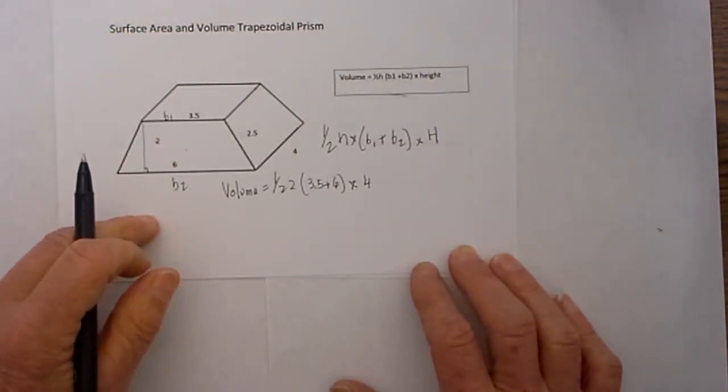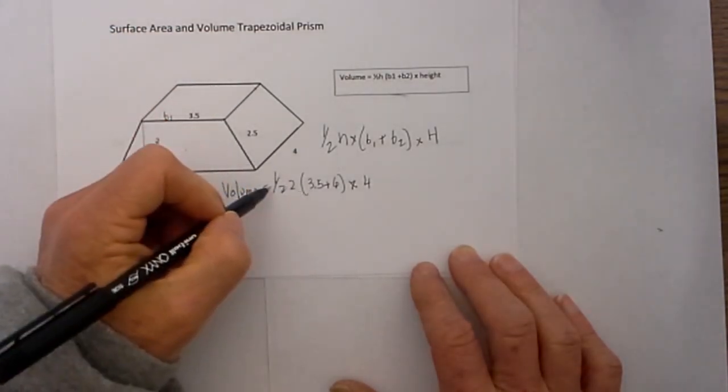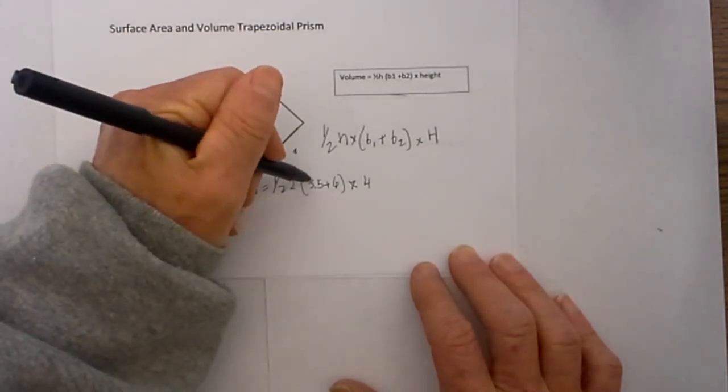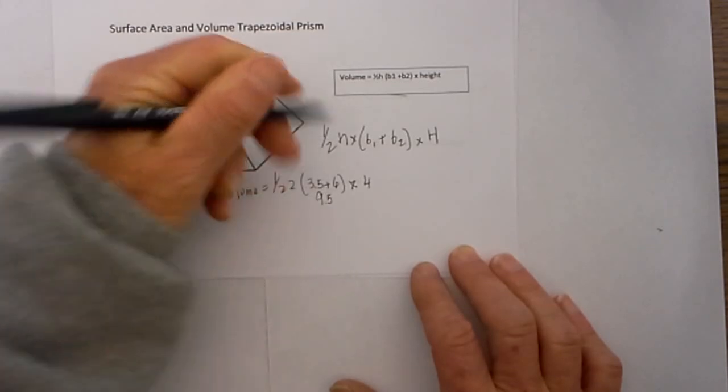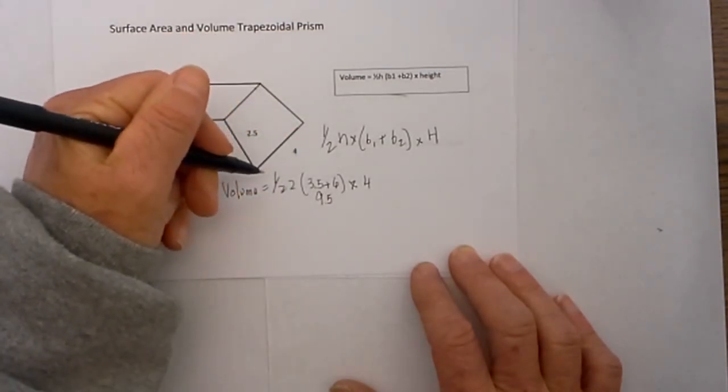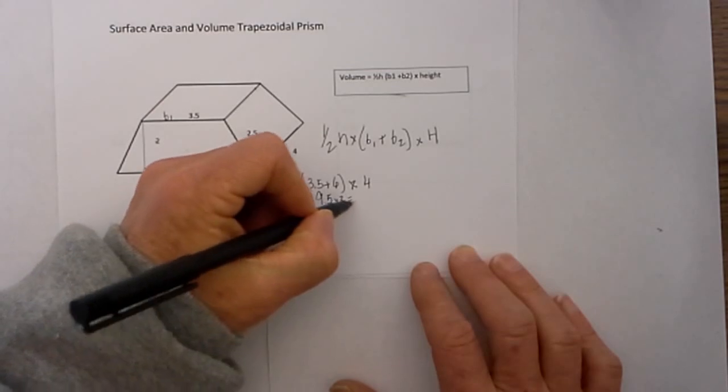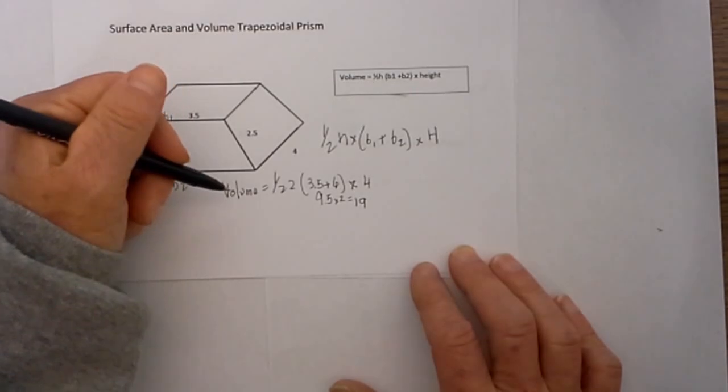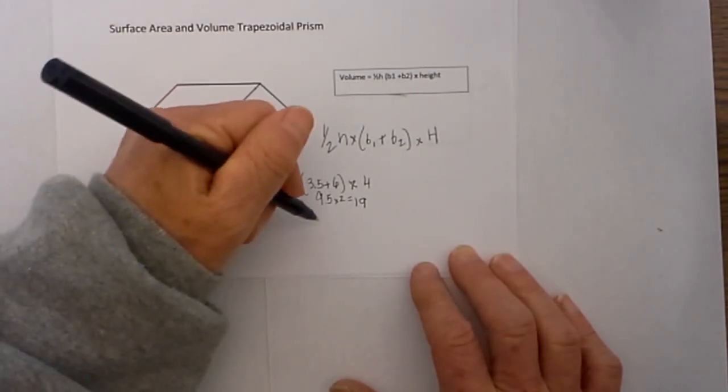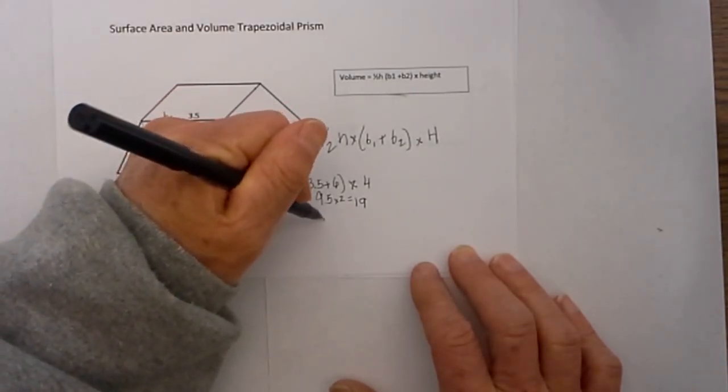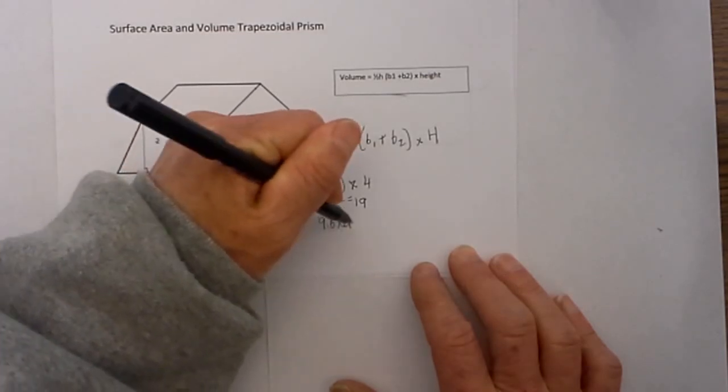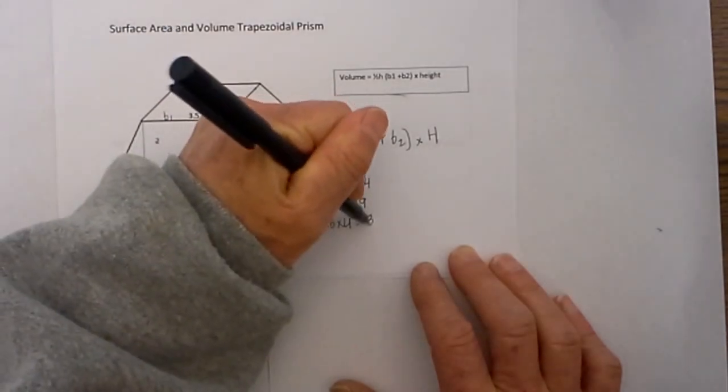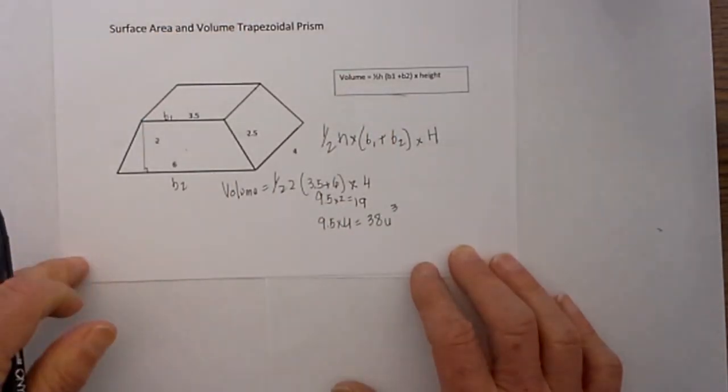Now when I do a little bit of math, first let's go 3.5 plus 6.5 is 9.5 and then if you multiply that by 2 that is equal to 19 and then half of 19 is 9.5 times 4 and 9.5 times 4 is 38 units cubed.